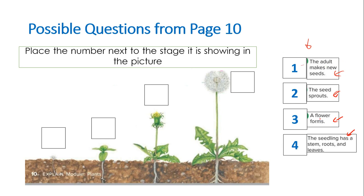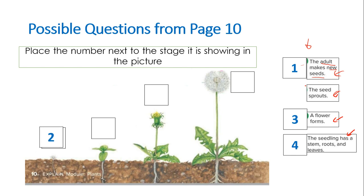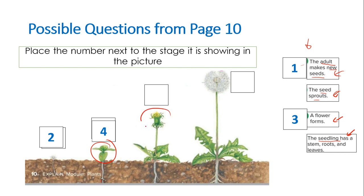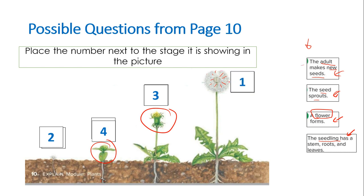Let's look at ordering the life cycle. The adult makes new seeds — the adult is the biggest one that can make a flower. The first picture is our seed sprouting. The second picture shows a seedling with roots, a stem, and leaves. Then we grow a flower, and eventually that flower grows into seeds of the plant.